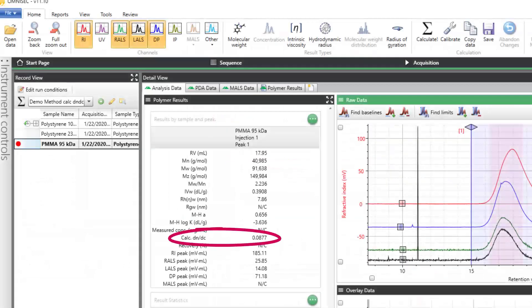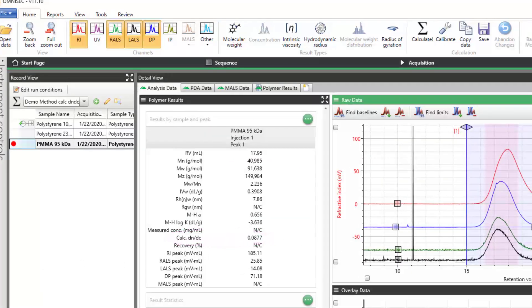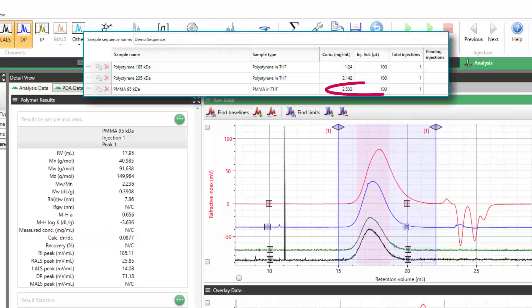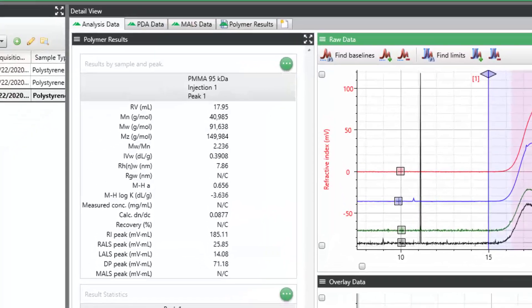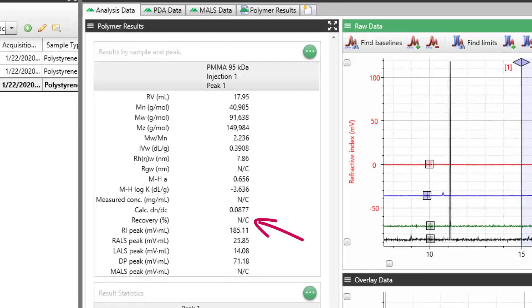When this method is applied, the DNDC value for the sample will be calculated based on the input sample concentration and injection volume, along with the observed refractive index peak area. There will be no recovery information because the software is assuming 100% quantitative recovery in order to calculate the DNDC value.